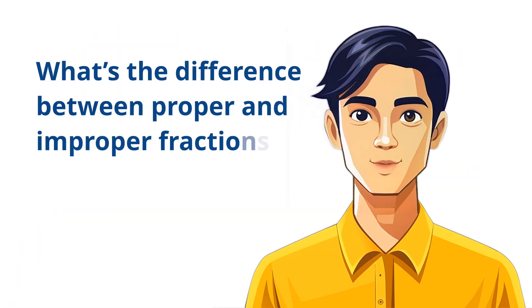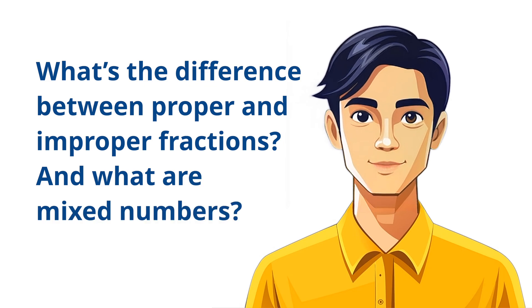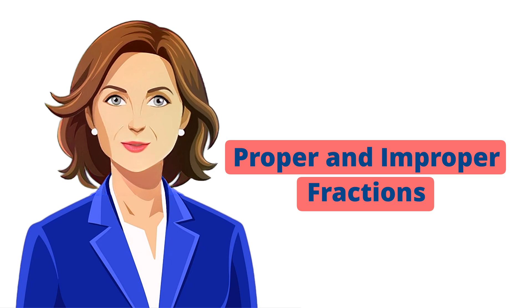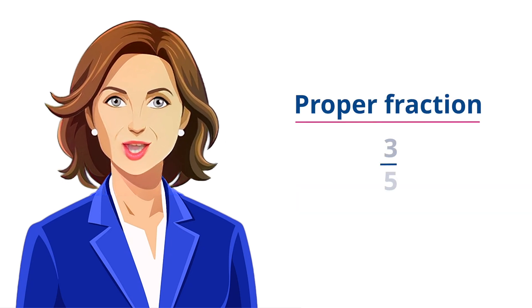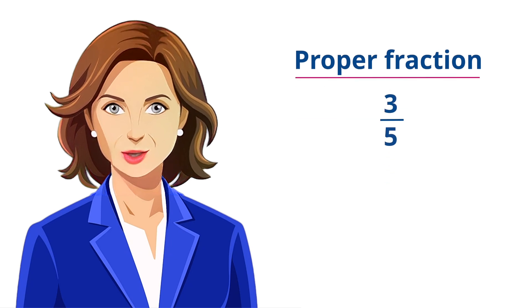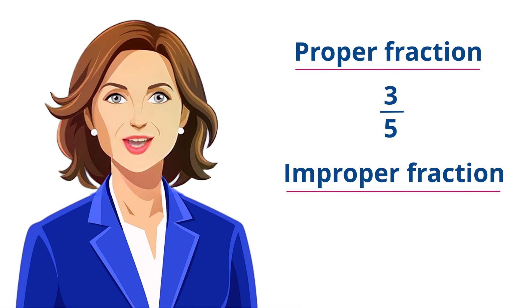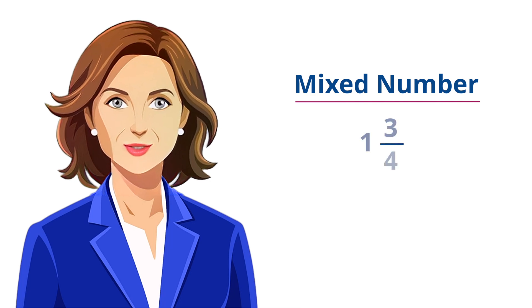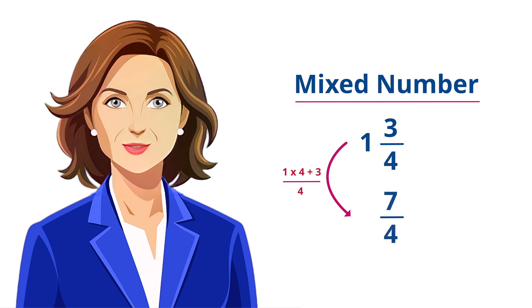What's the difference between proper and improper fractions, and what are mixed numbers? Good question. A proper fraction has a numerator smaller than the denominator, like three over five. An improper fraction has a numerator larger than or equal to the denominator, like seven over four. A mixed number combines a whole number with a fraction, like one and three over four. You can convert a mixed number to an improper fraction, and vice versa.